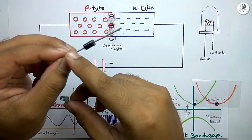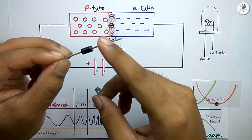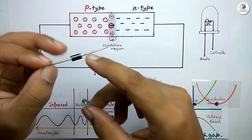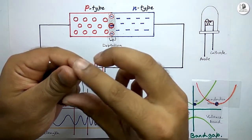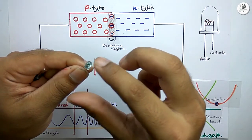But if you apply a forward voltage to an ordinary PN junction diode, no light emits from this diode. However, if you apply a forward voltage to an LED, light can emit through it.